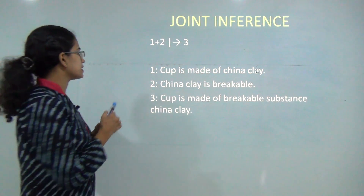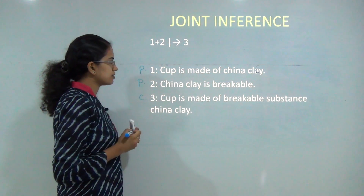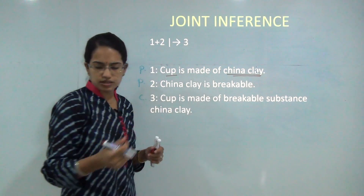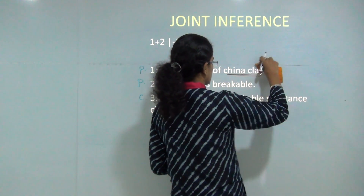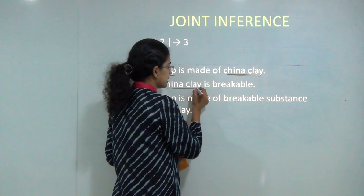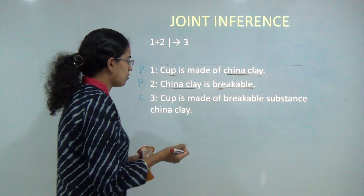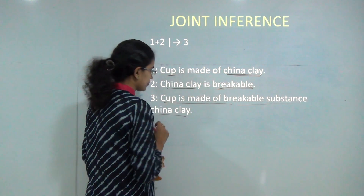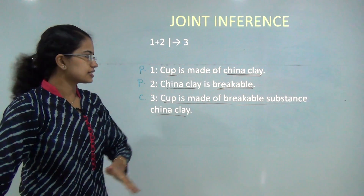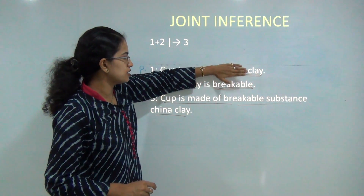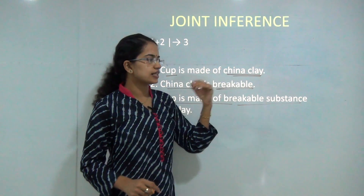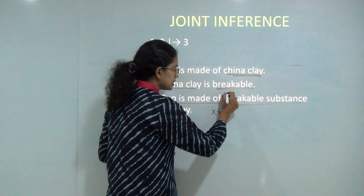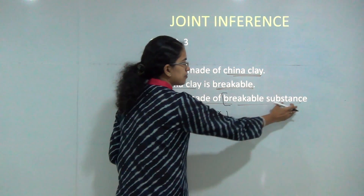My first premise states 'cup is made of china clay.' The next premise says 'china clay is a substance that is breakable.' My conclusion says 'cup is made up of breakable substance, china clay.' To understand this, let's try hiding the first premise — if I hide it, I just have 'china clay is breakable,' which is insufficient to fully support the conclusion about the cup.